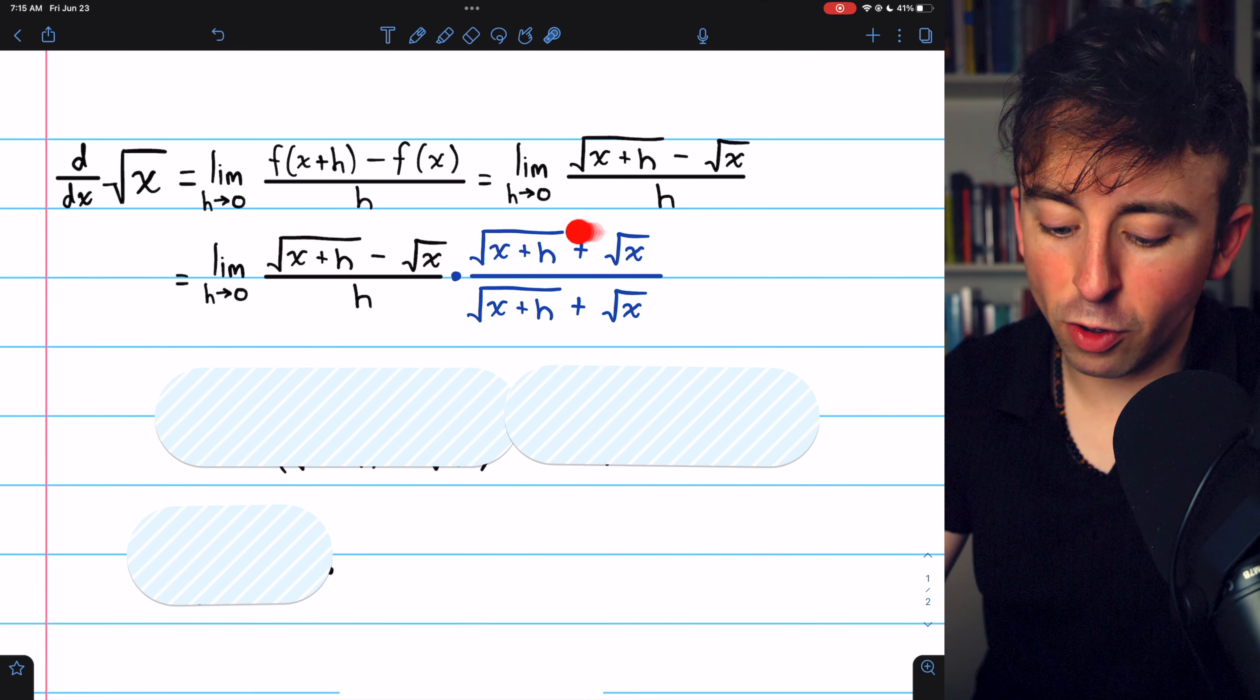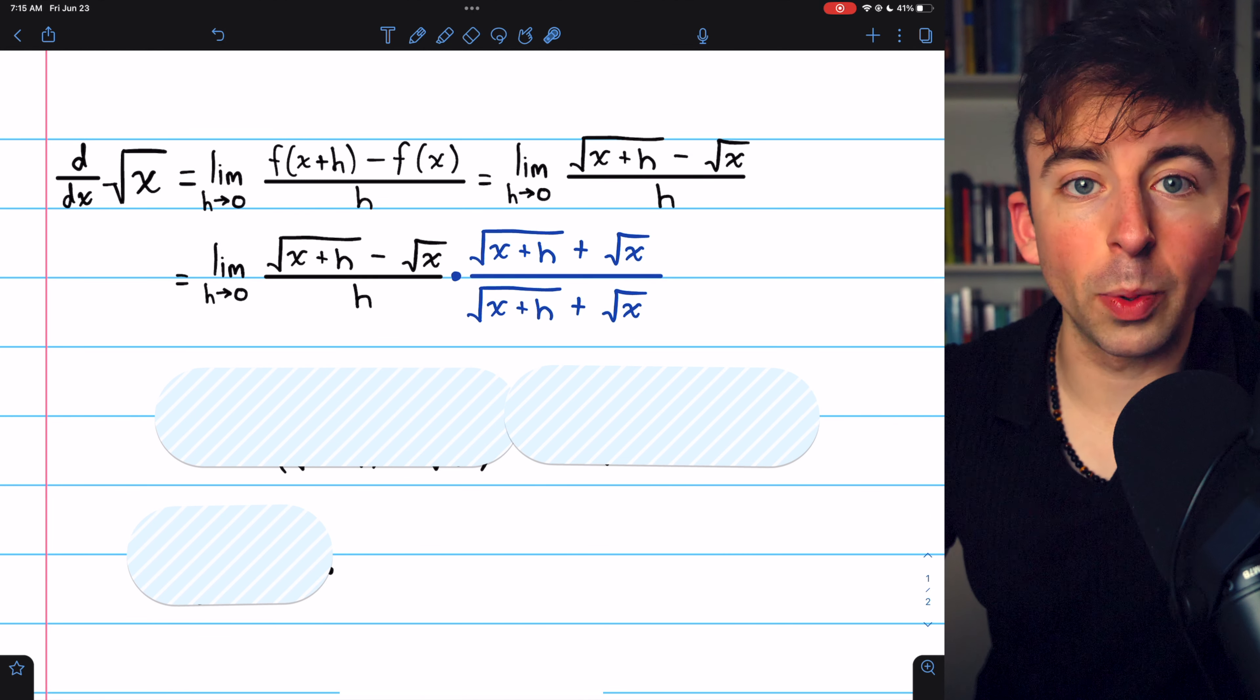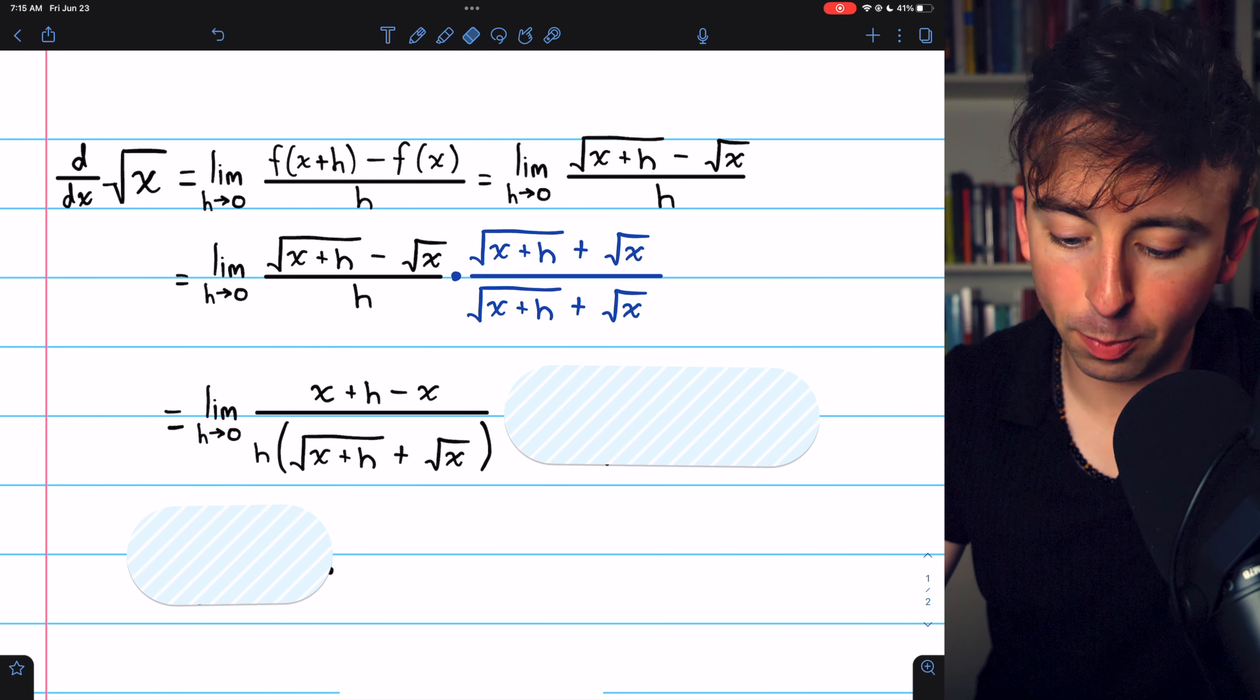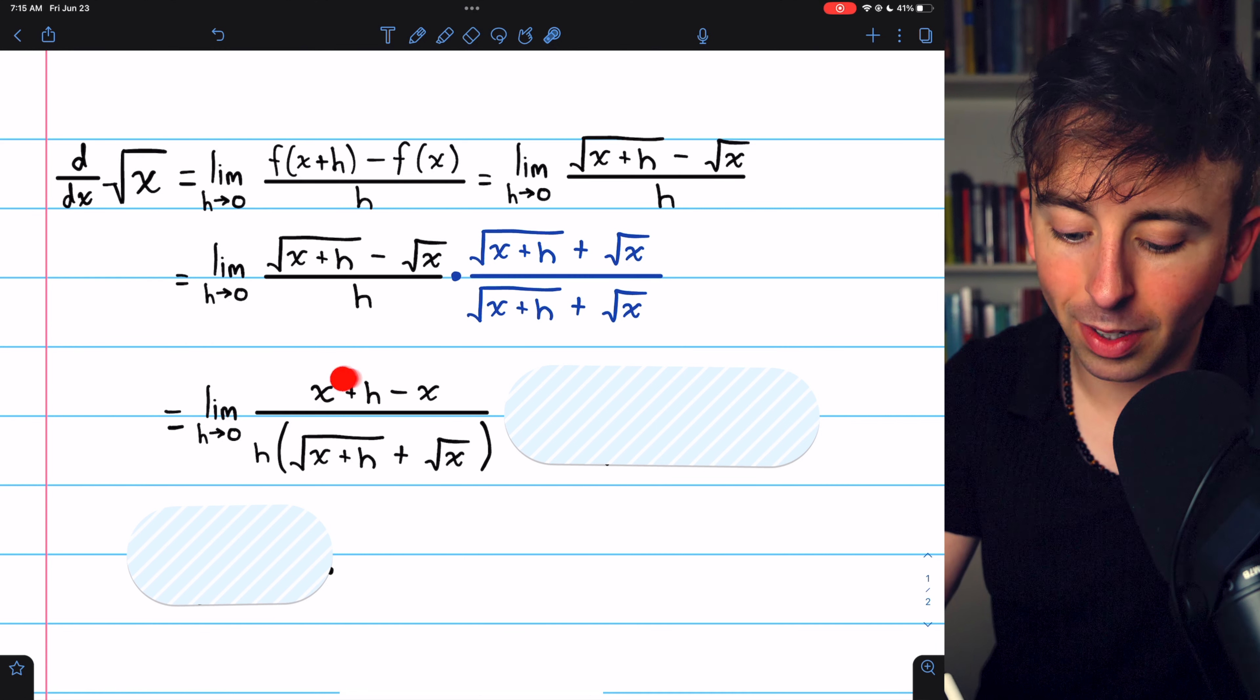Once we do this multiplication in the numerator, you should be pretty familiar with the conjugate at this point. We're just going to get the difference of squares. So instead of root x plus h, we'll just have x plus h.